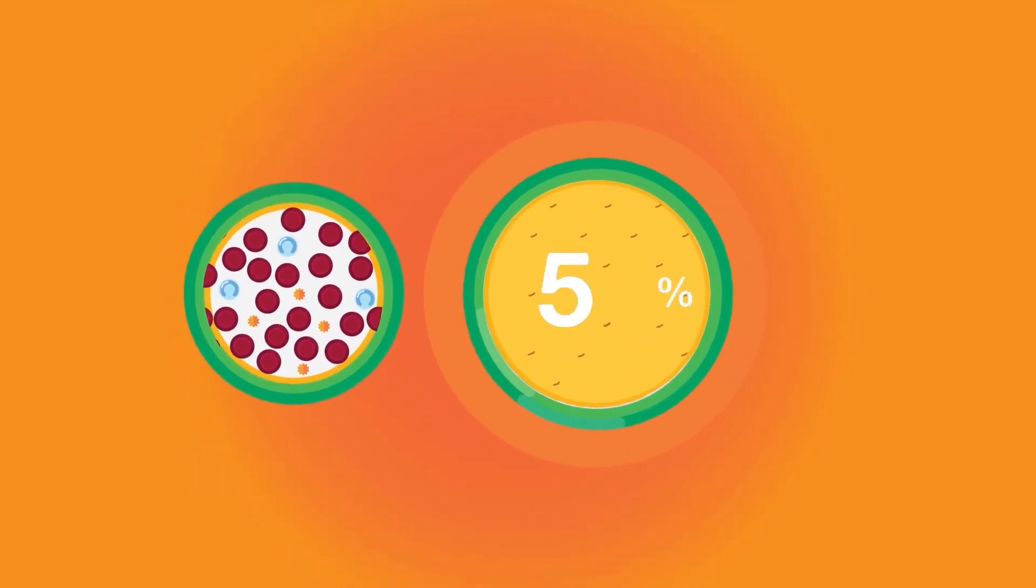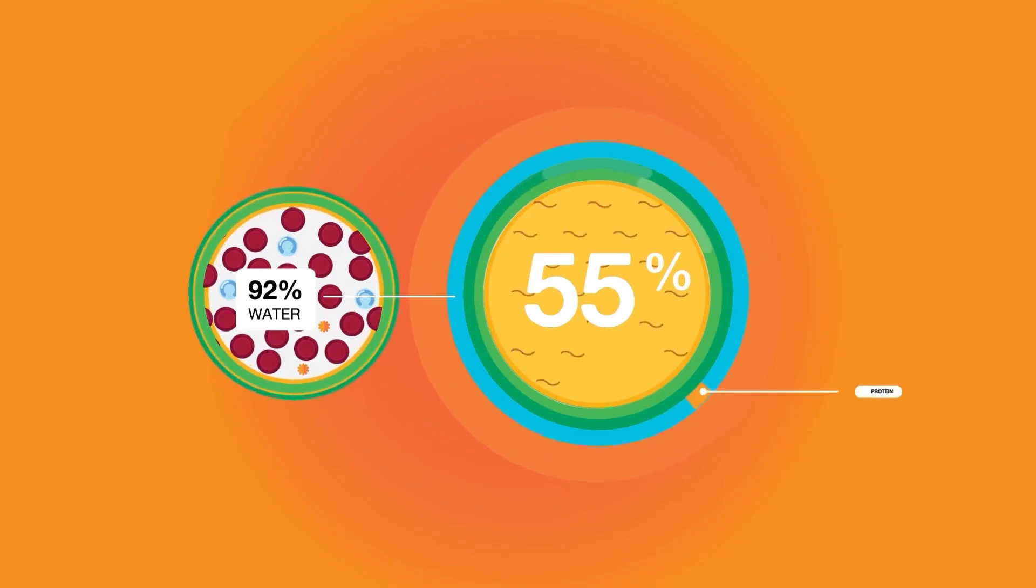Plasma, which constitutes 55% of blood fluid, is mostly water, 92% by volume, and contains dissipated proteins, glucose, mineral ions, hormones, and carbon dioxide.